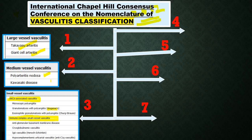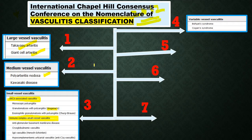The newer additions included in this current classification are: variable vessel vasculitis, which includes Behçet's syndrome and Cogan's syndrome.